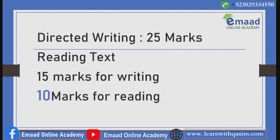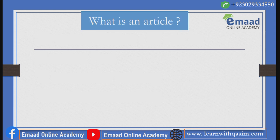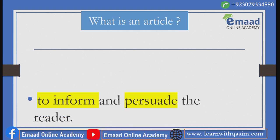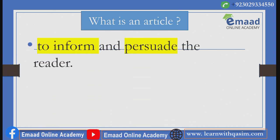To answer this question well, you must be good at both skills: reading and writing. The purpose of an article is often to inform and persuade the reader. You would have read newspaper articles, school or university magazine articles, and other types such as medical articles, articles about diseases, social aspects, and politics.